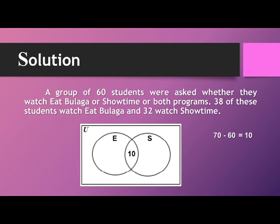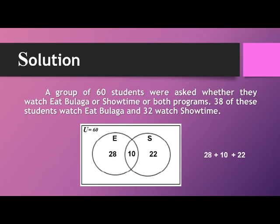Then, to get the number of students who watch Showtime only, we have thirty-two minus ten, that's twenty-two. For It's Bulaga, thirty-eight minus ten is twenty-eight, so there are twenty-eight students who watch It's Bulaga only. If we add all of them, we have twenty-eight plus ten plus twenty-two, which is equal to sixty.